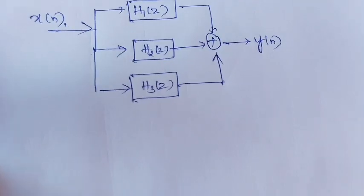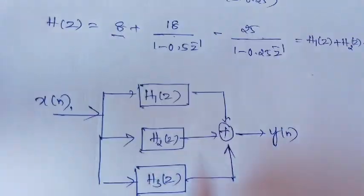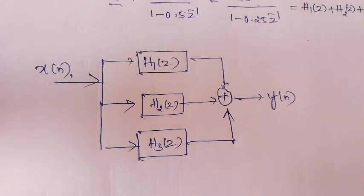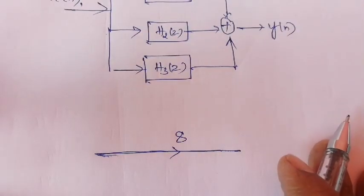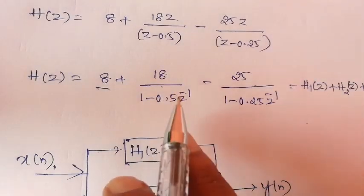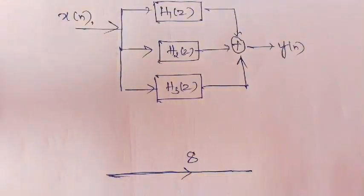Let us realize each system function step by step in terms of DF2. First, H1(z) = 8, which is a constant term — x(n) is simply multiplied by 8.